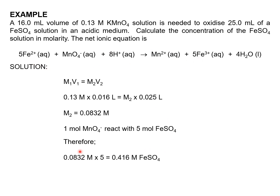Since 1 mole of permanganate reacts with 5 moles of ferrous sulfate, this value must be multiplied by 5 based on the molar ratio seen in the stoichiometric equation. Finally, the concentration of ferrous sulfate is 0.416 molar.